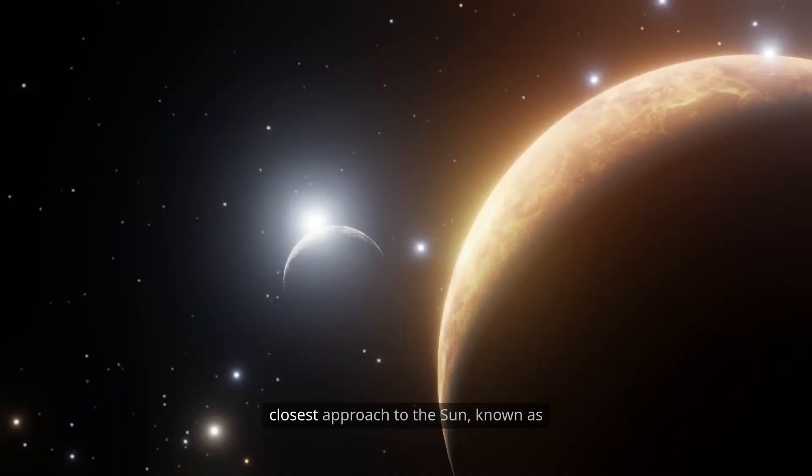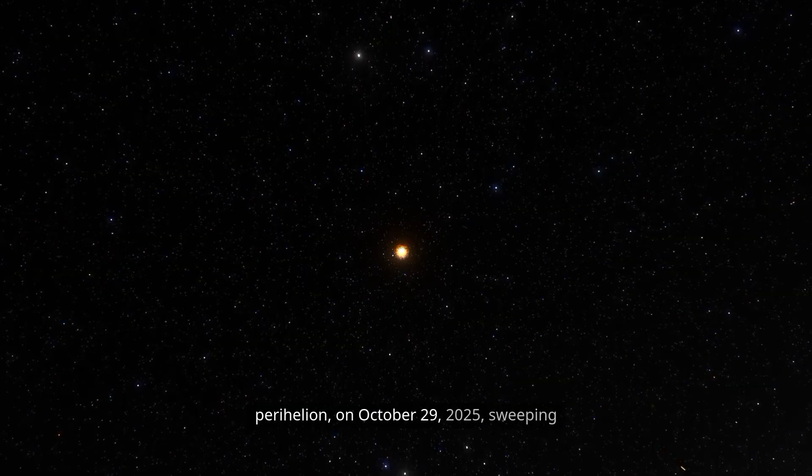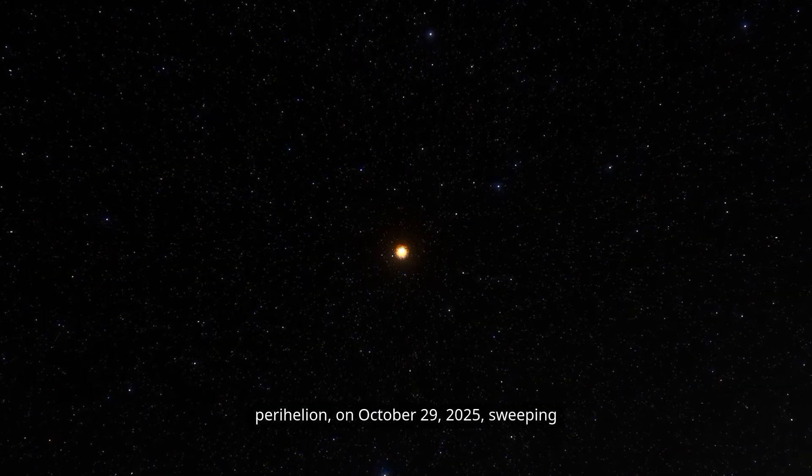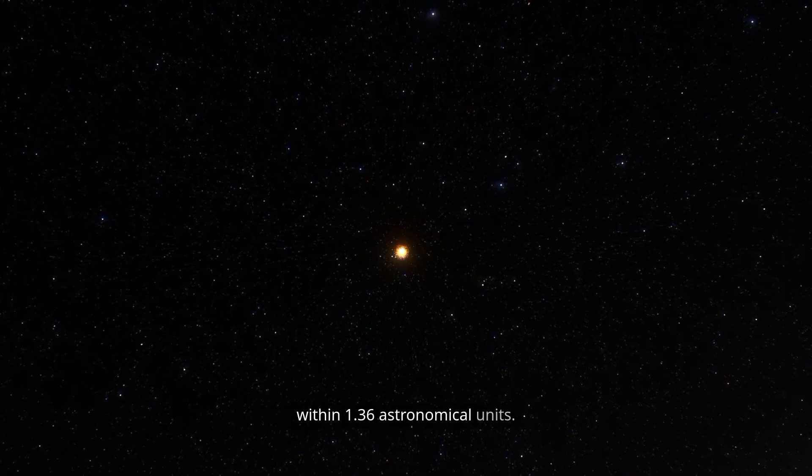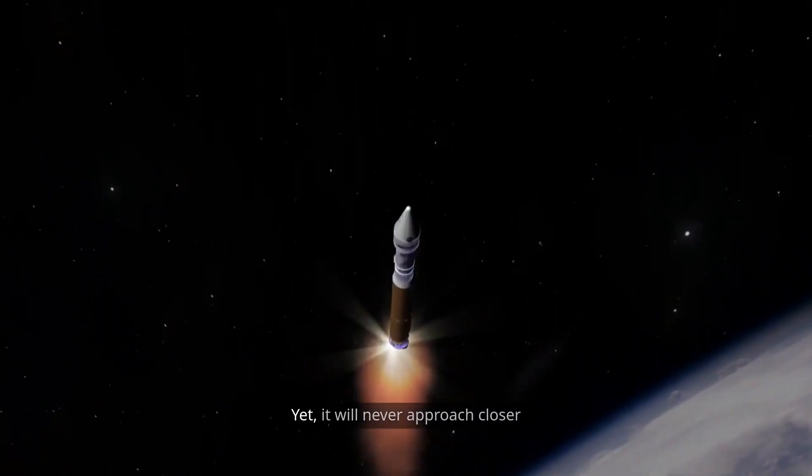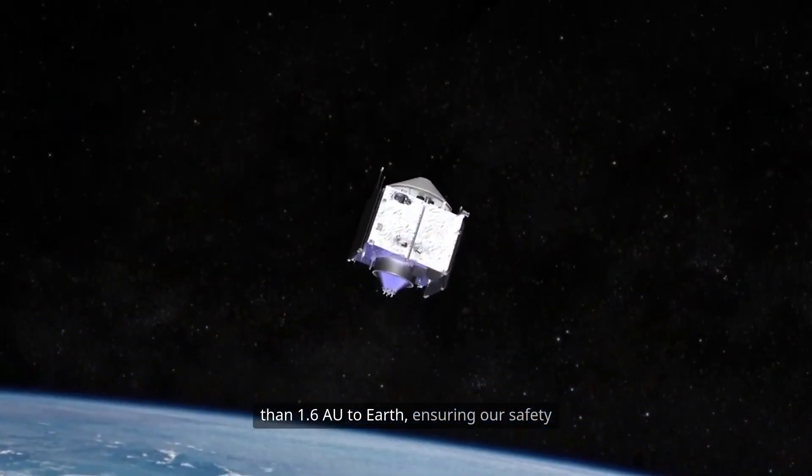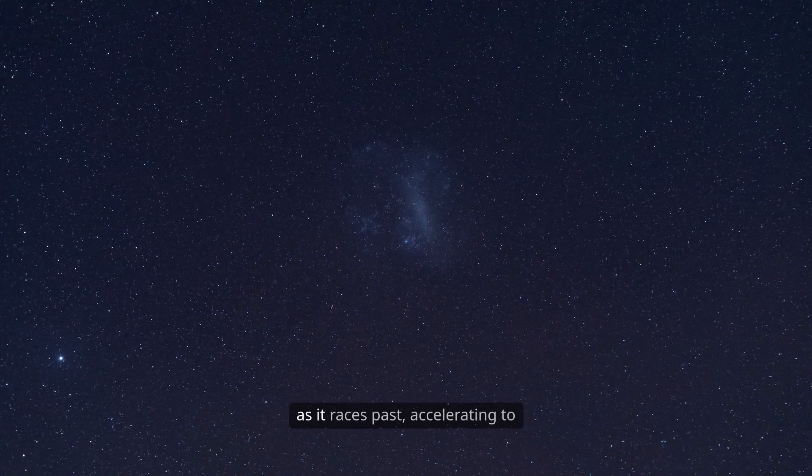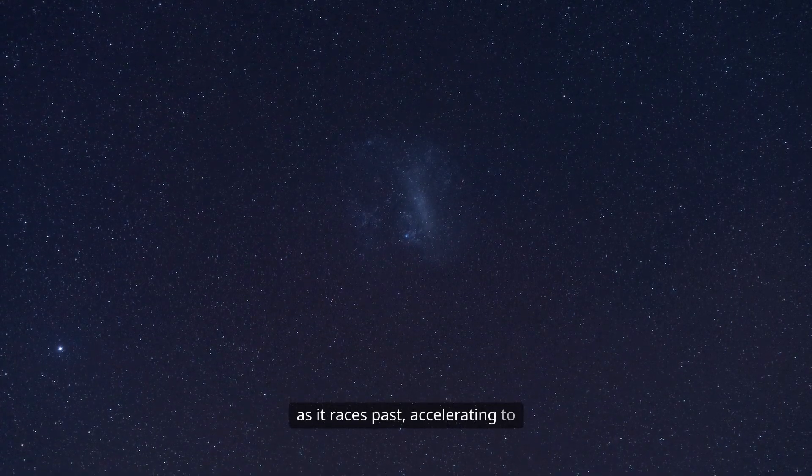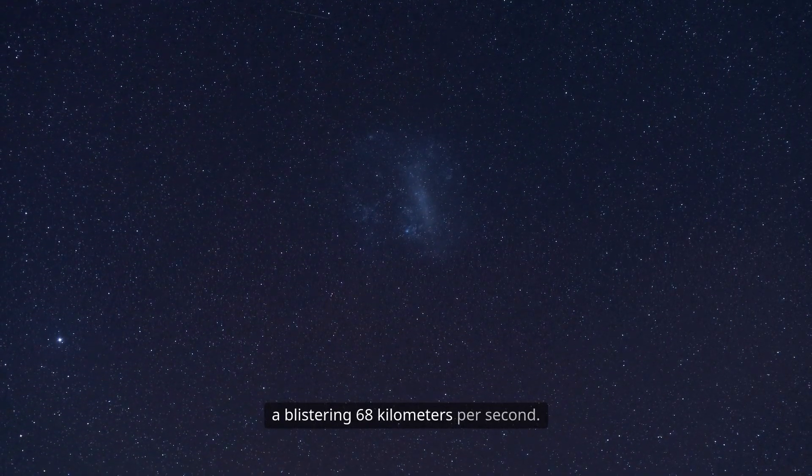This cosmic traveller will reach its closest approach to the Sun, known as perihelion, on October 29, 2025, sweeping within 1.36 astronomical units. Yet it will never approach closer than 1.6 AU to Earth, ensuring our safety as it races past, accelerating to a blistering 68 kilometres per second.